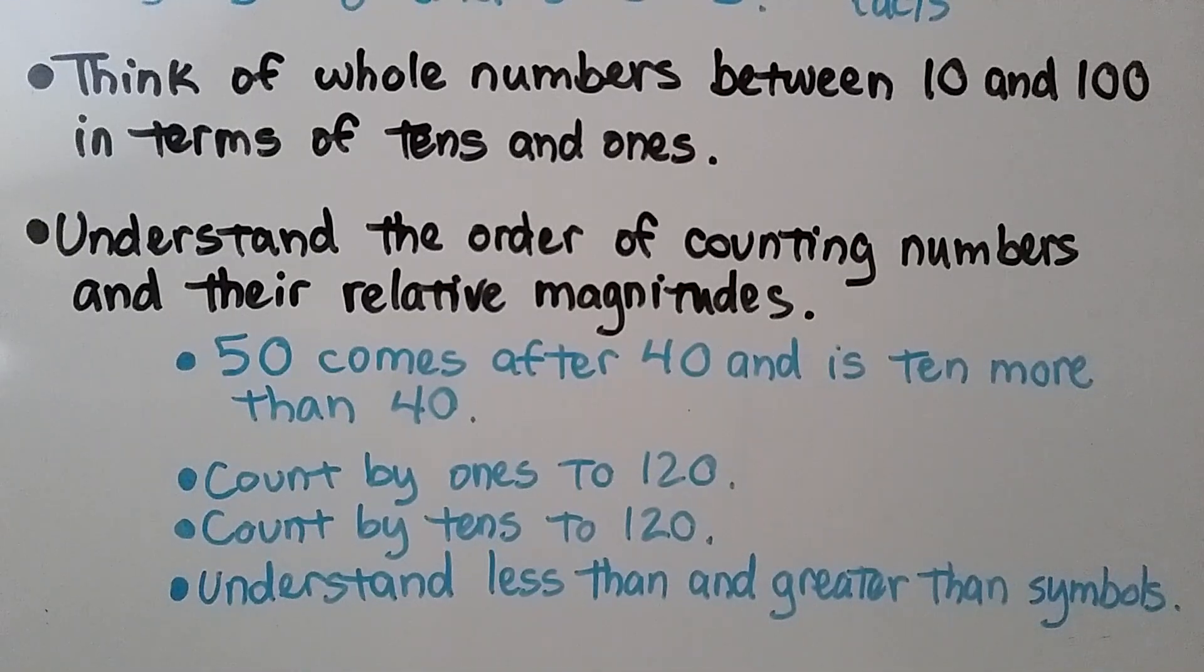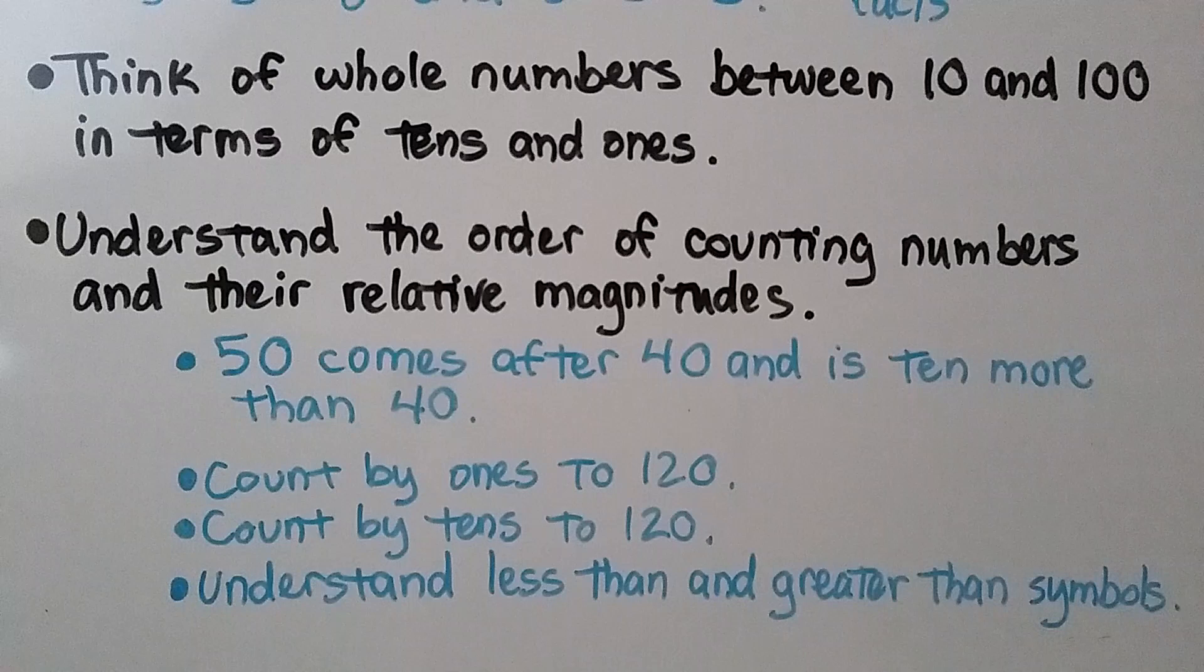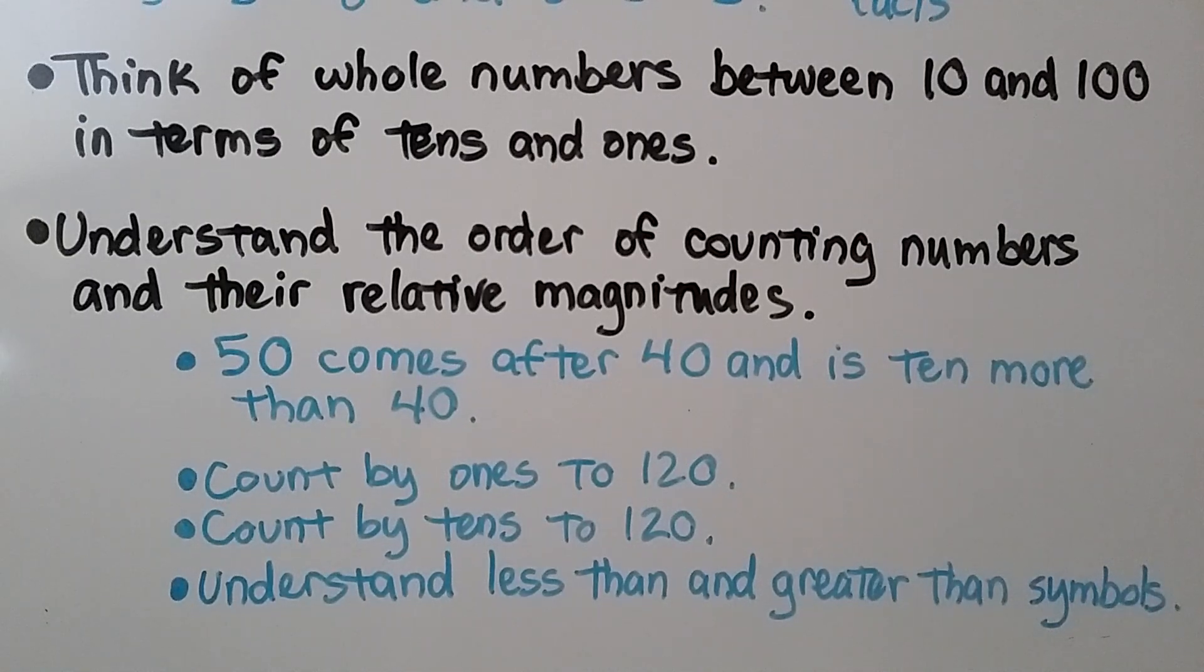They need to think of whole numbers between 10 and 100 in terms of tens and ones. Do they know that 70 is 7 tens and 0 ones? They need to understand the order of counting numbers and their relative magnitudes. That 50 comes after 40 and is 10 more than 40.